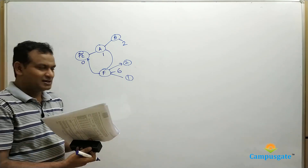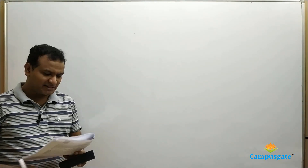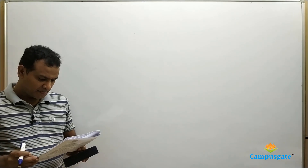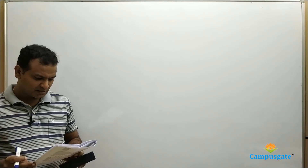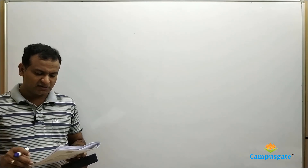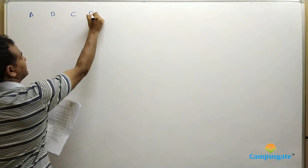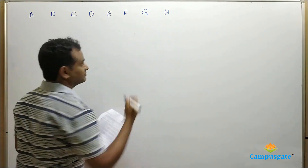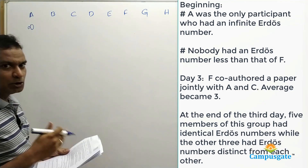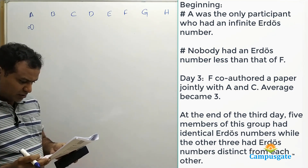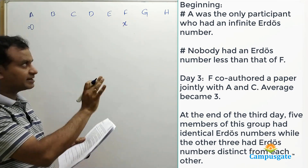That is the brief background of this question. In this question, there are 8 mathematicians A to H. In memory of Paul Erdős, they met to discuss some mathematical problems. At the beginning of the conference, A was the only participant who had an infinite Erdős number. And nobody had an Erdős number less than that of F — so F has got an Erdős number of X. That is the starting point of this question.